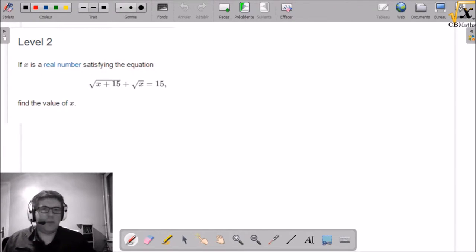You can pause the video to solve the problem. So, square root of x plus 15, plus 15, equals 15 minus square root of x. You can put the square off in both sides of the equation.